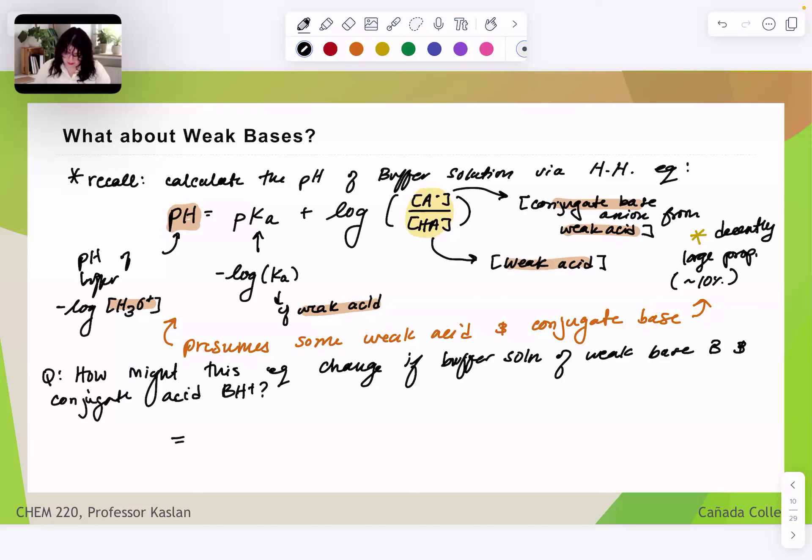So we can imagine that we would have, instead of pKa, pKb, where pKb is the dissociation constant of our weak base with the negative log taken of that. Plus the log base 10, and let's pay attention to what we see in the format of the Henderson-Hasselbalch equation for a weak acid. We have conjugate over the original weak substance. So in our case, this is going to be the conjugate acid, BH+, over the original weak base, B.